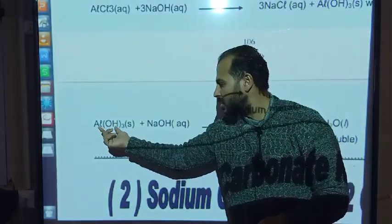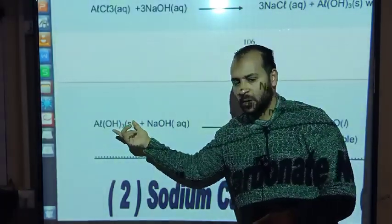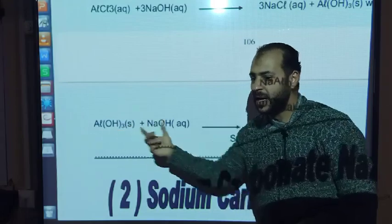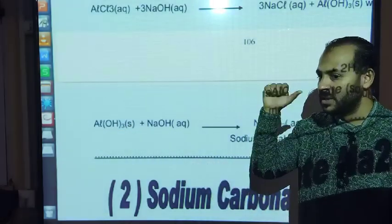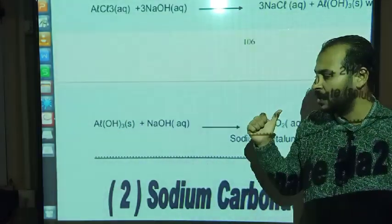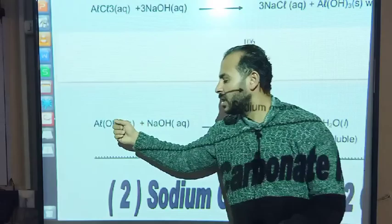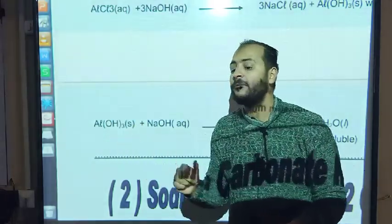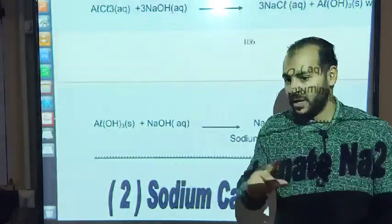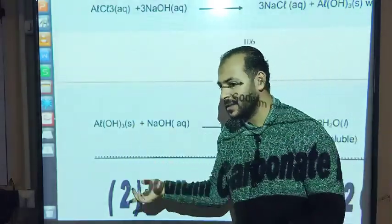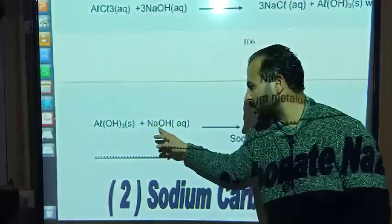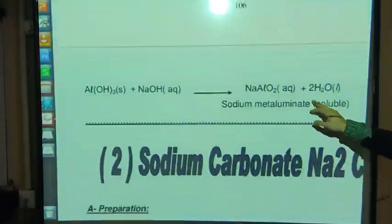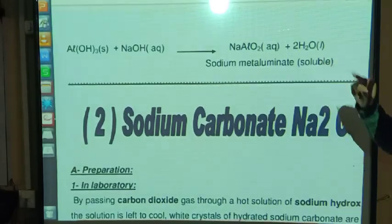The reason aluminum hydroxide reacts with excess sodium hydroxide is because aluminum compounds are amphoteric — they can react as both an acid and a base. So aluminum hydroxide reacts with the alkali (NaOH) to form soluble sodium meta-aluminate.